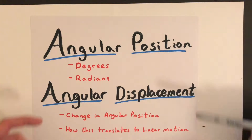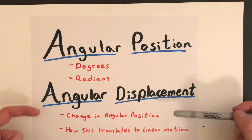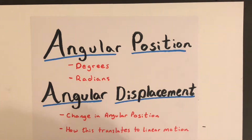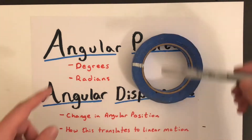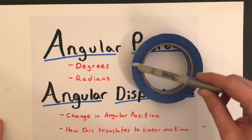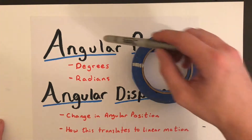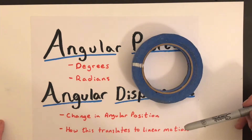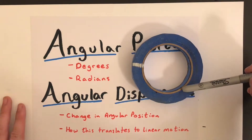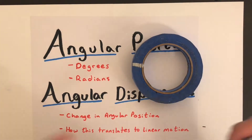In this video we're going to cover two main topics: angular position and angular displacement. When we're talking about angular position and displacement, we're talking about something moving in a circular path. Angular position is where along that circular path an object is, and angular displacement is how far along that circular path it has traveled.